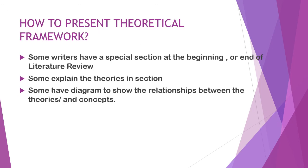There's no hard and fast rule about where to place the theoretical framework. Some writers put it at the beginning of the literature review, others at the end. Some explain theories in subsections describing how they combined them. Others begin with a diagram showing the relationship between theories leading to the research objective — but remember, the diagram doesn't speak for itself and needs an explanation below it.